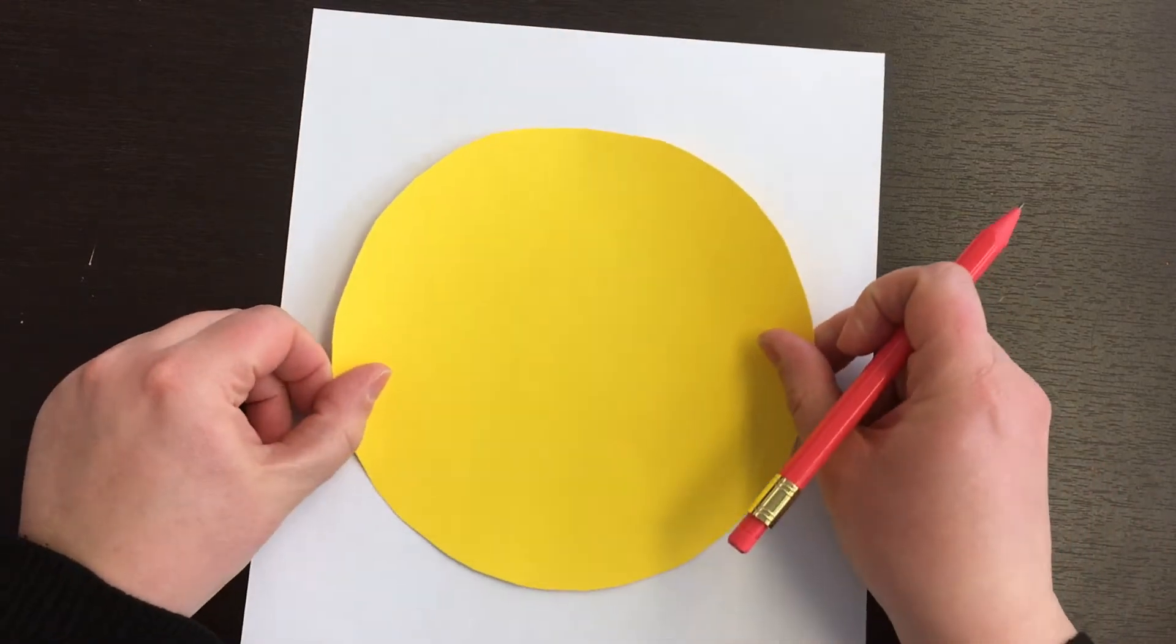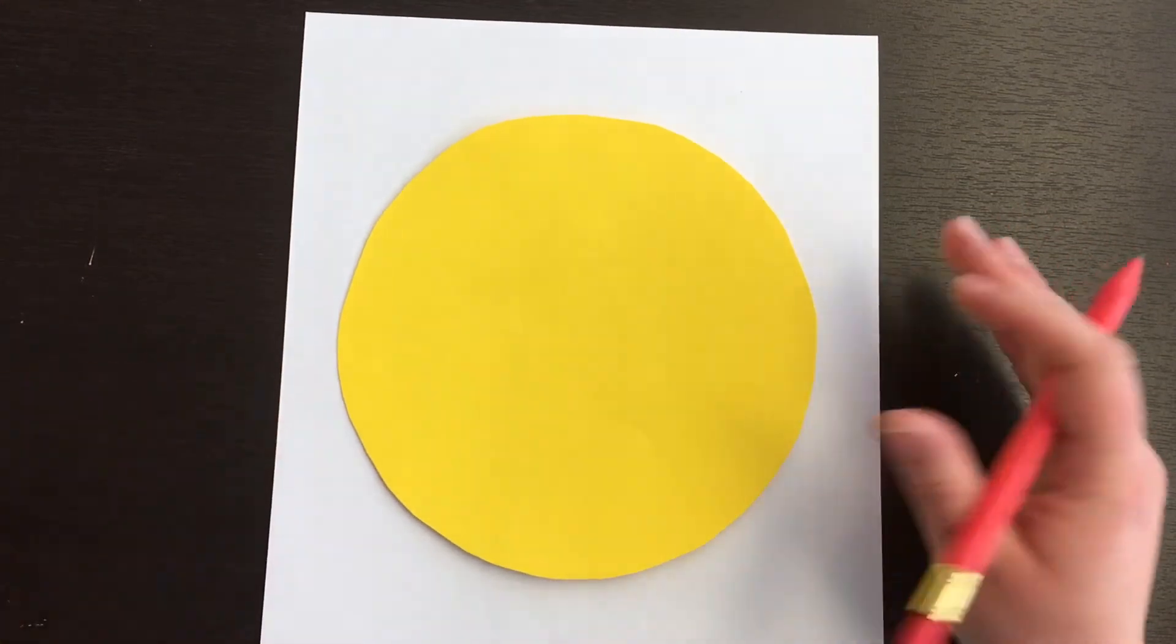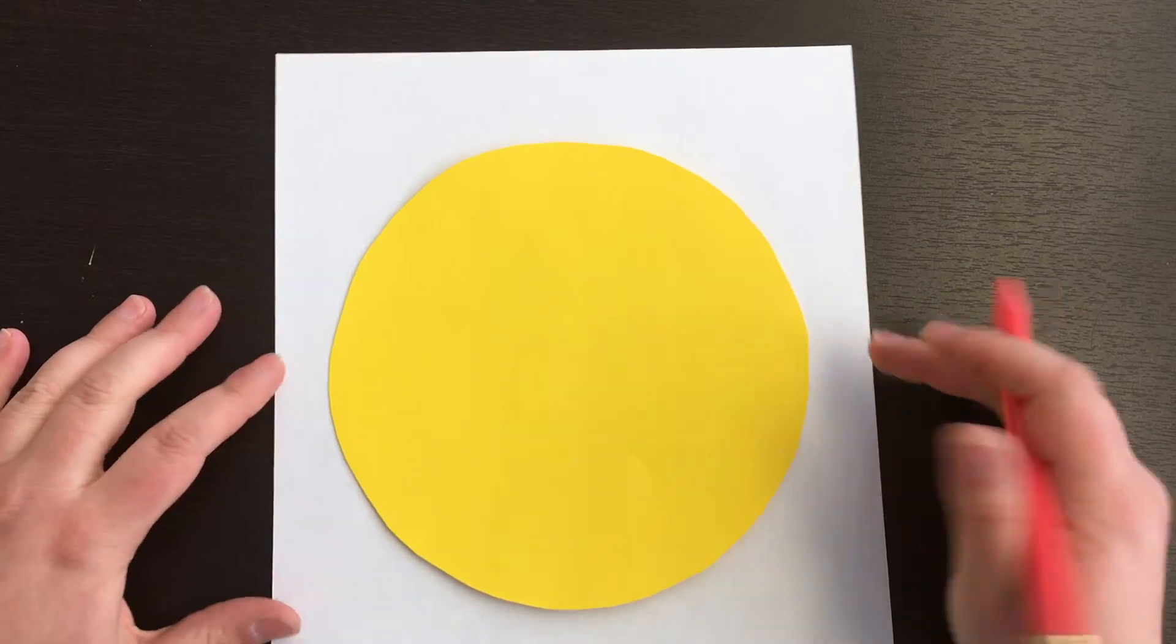To get started on our copycats we need to draw the head, so a big circle. Now you might have a stencil or sometimes we trace the paint trays in the classroom, but we want it to be nice and big. It's going to take up a large portion of our picture.